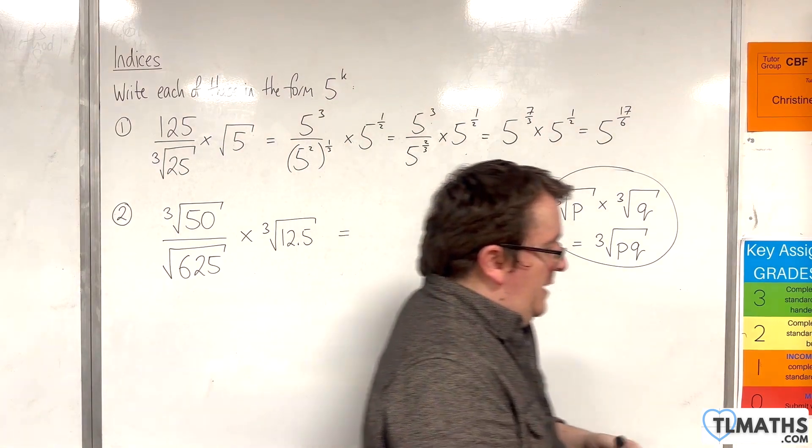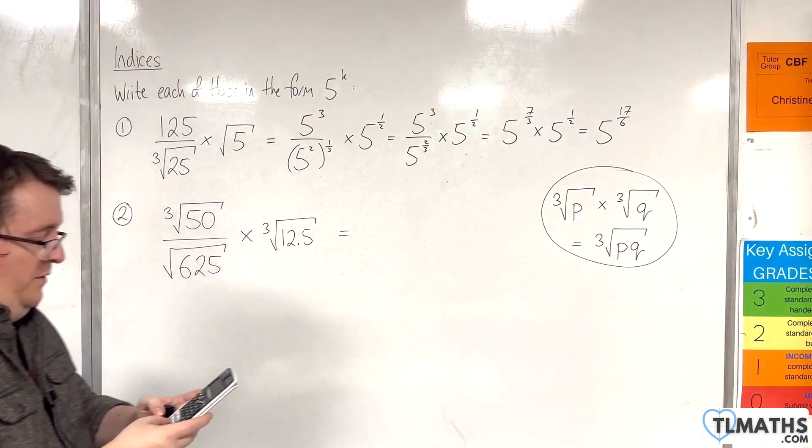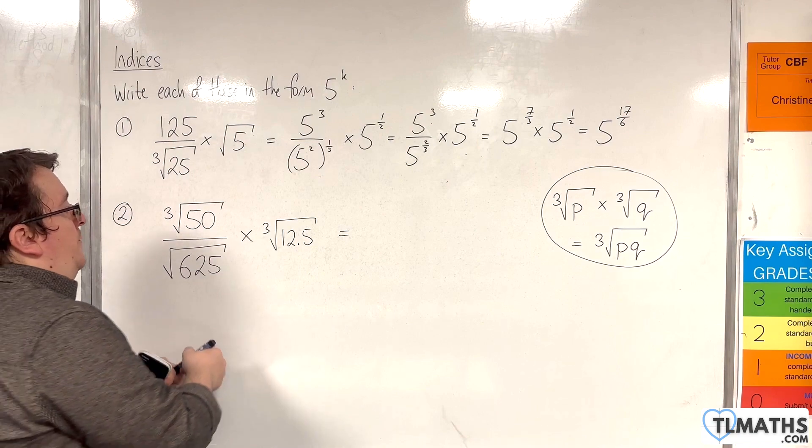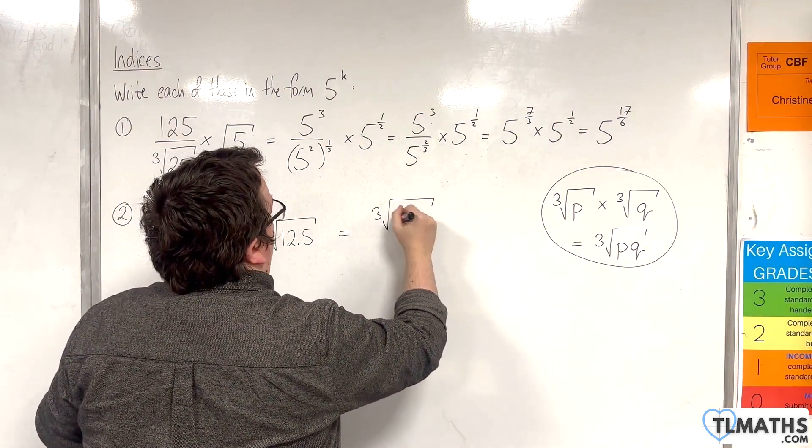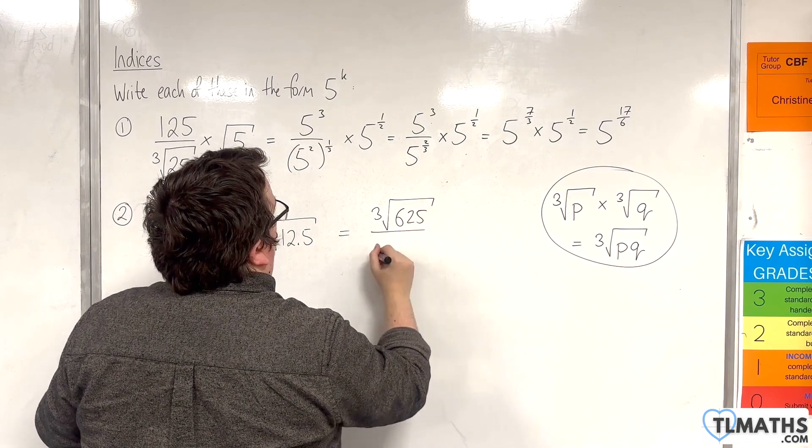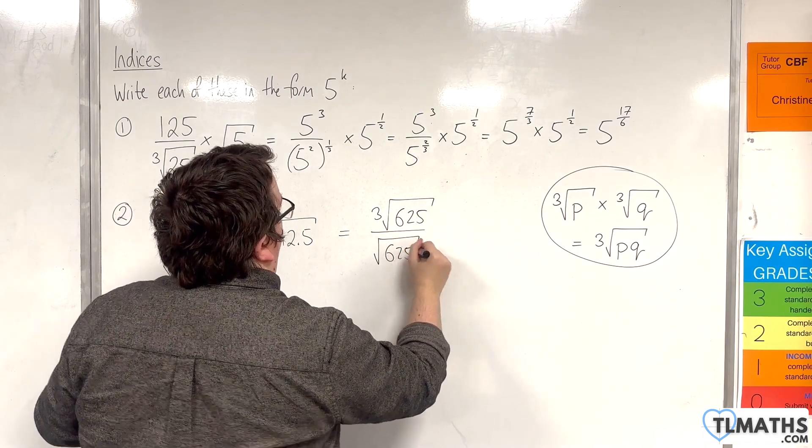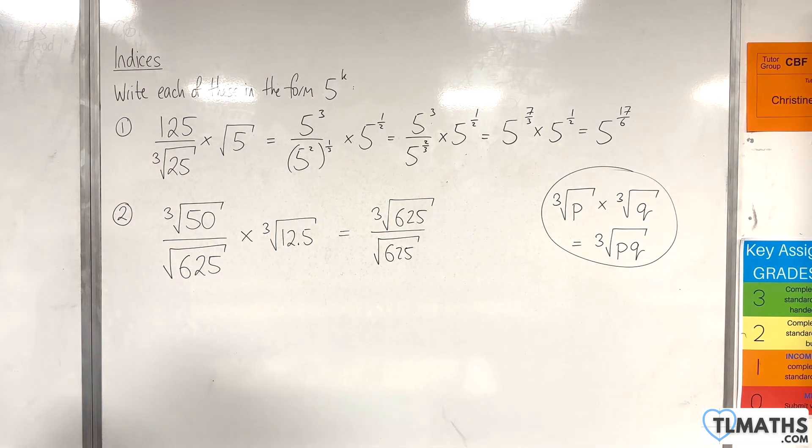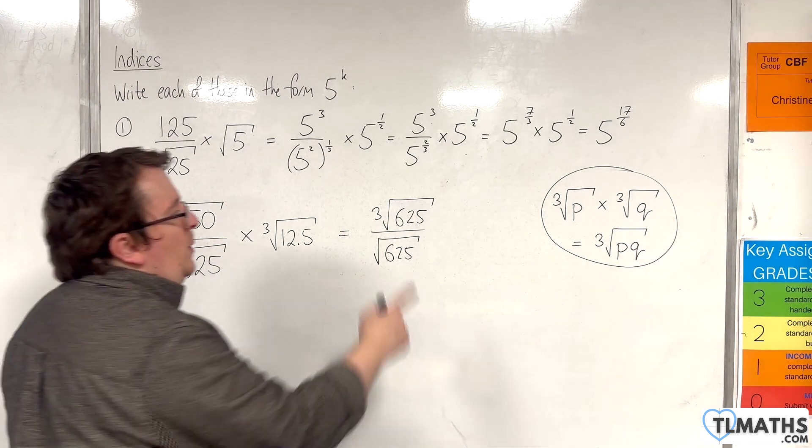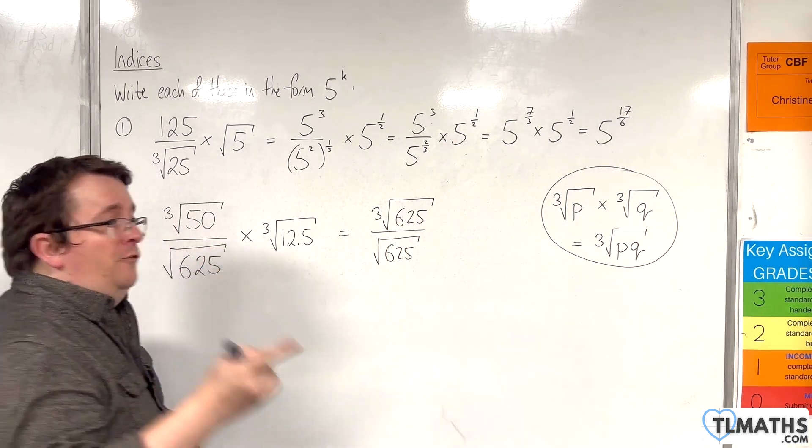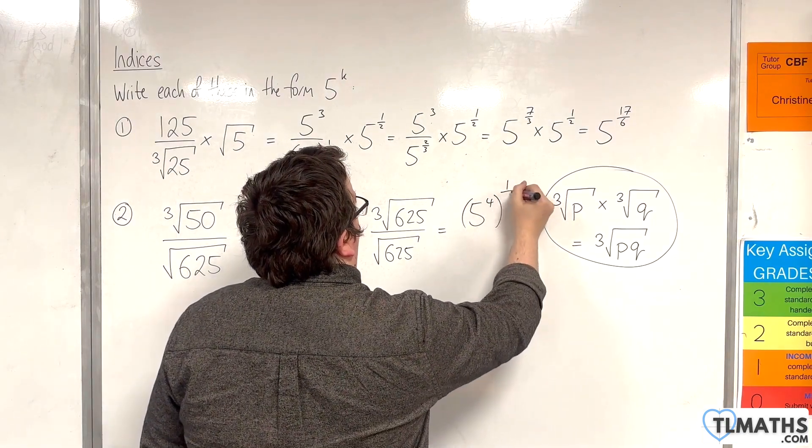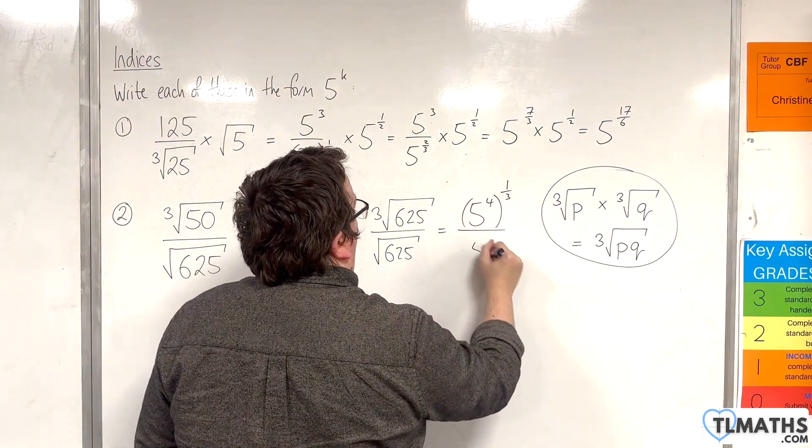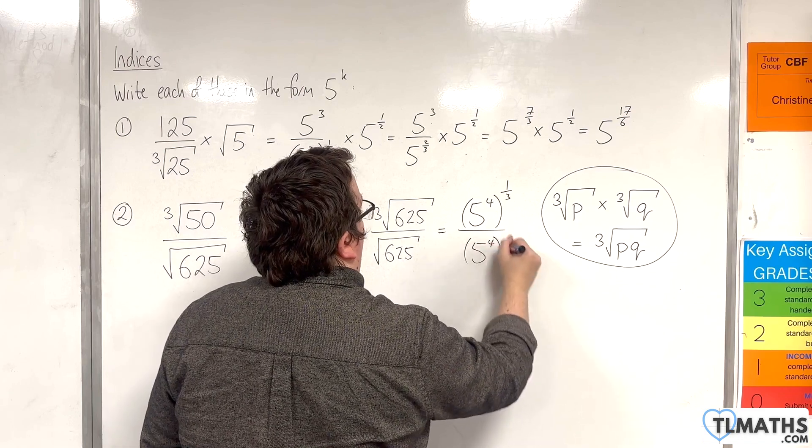And 50 times by 12.5 is 625. So we've actually got the cube root of 625 over the square root of 625. Now 625 is 5 to the power of 4. So we've got 5 to the power of 4 to the power of a third over 5 to the power of 4 to the power of a half.